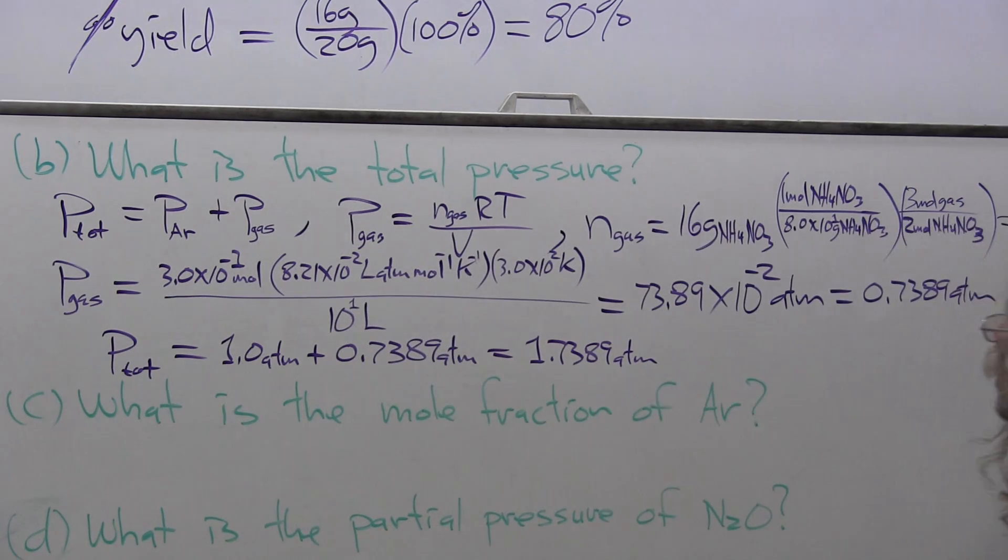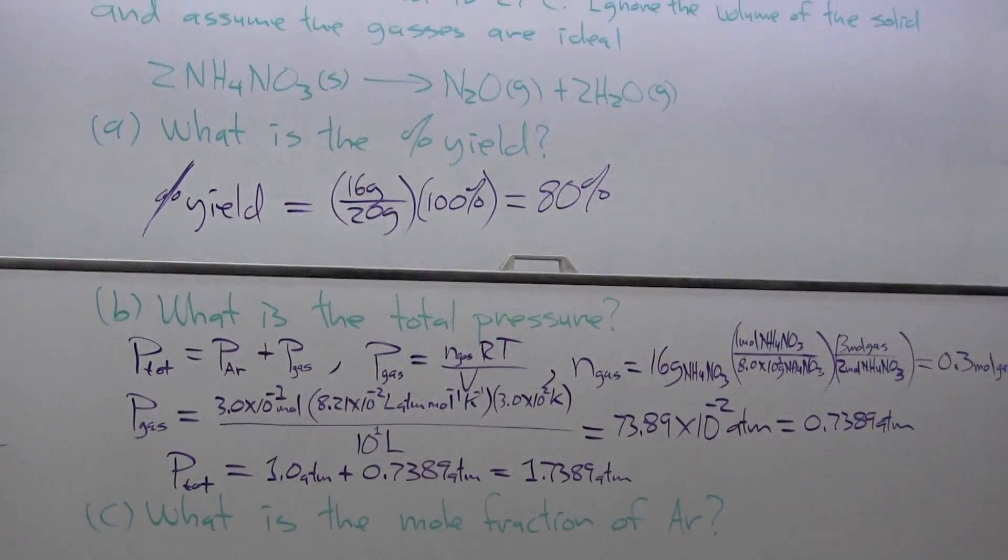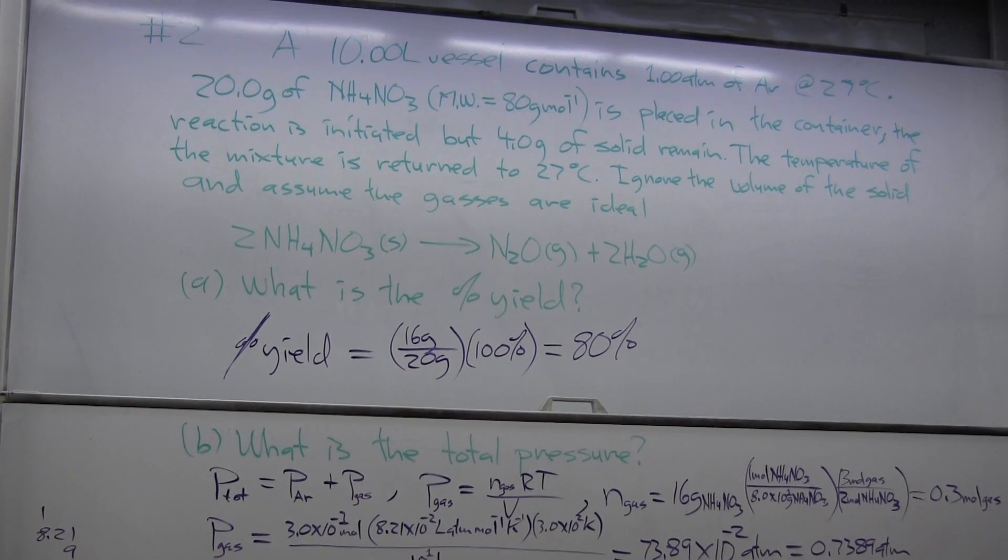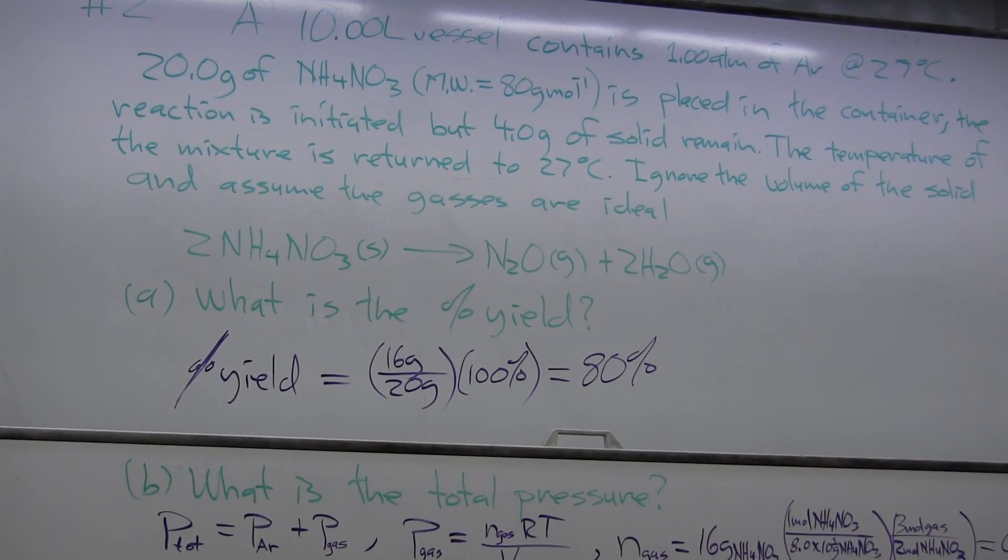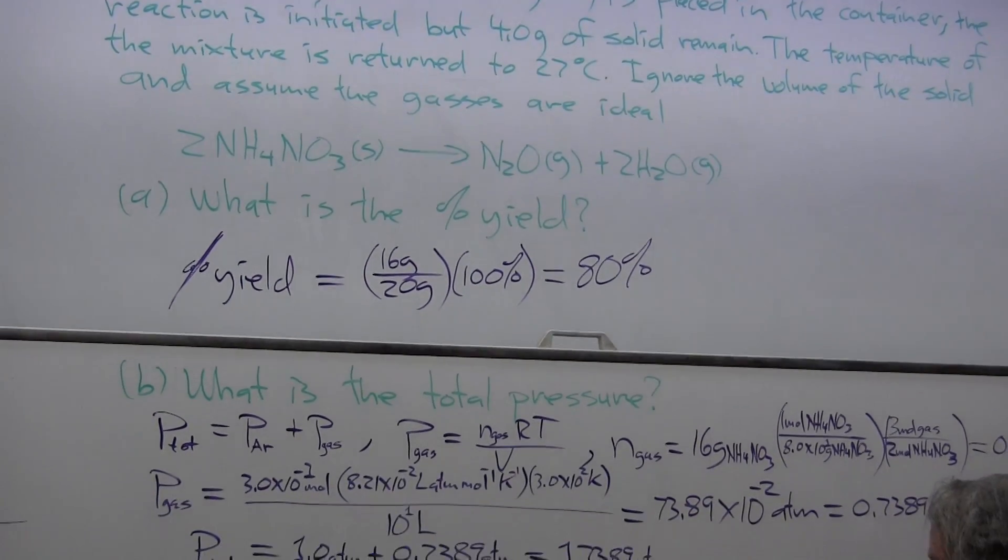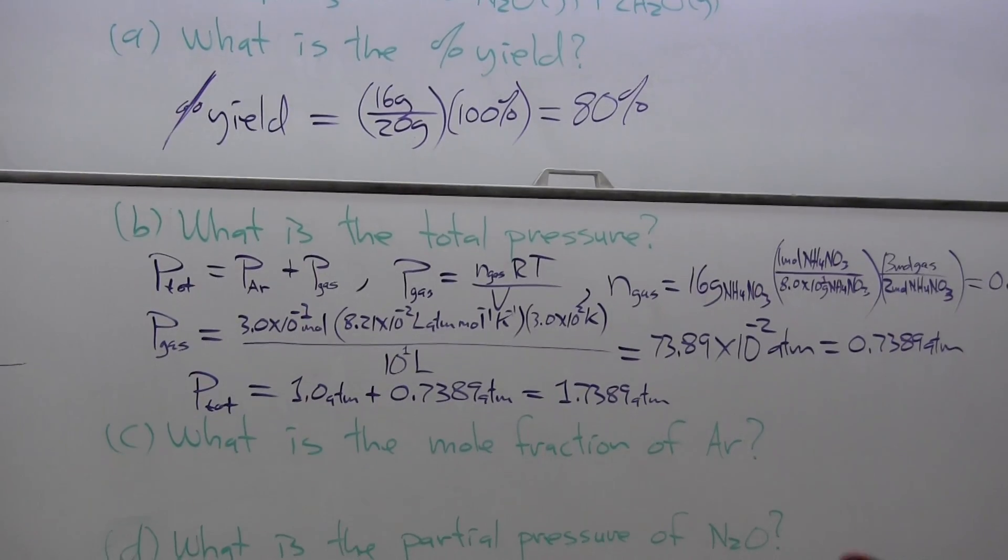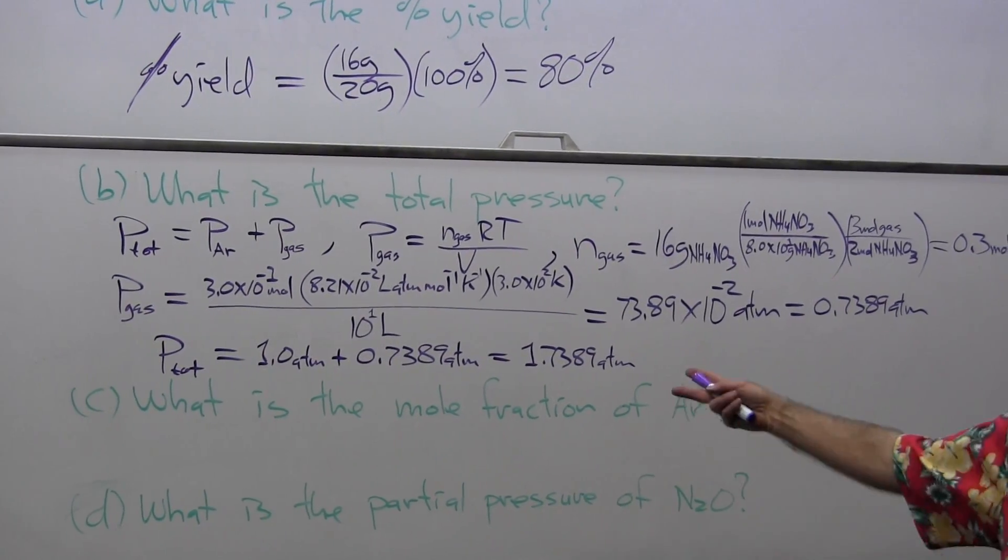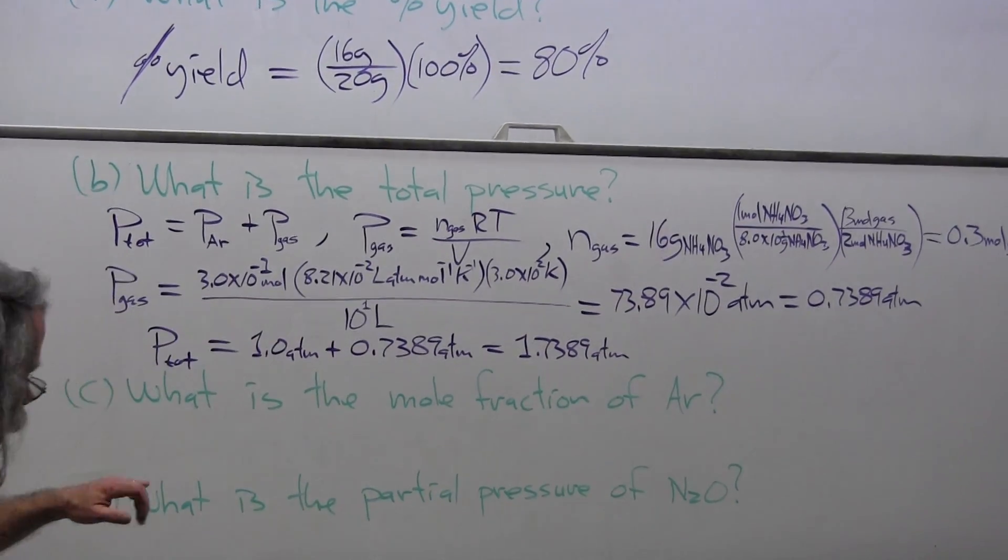Now P_total is equal to the pressure of argon plus the pressure of the gas equals 1.0 atmospheres plus 0.7389 atmospheres equals 1.7389 atmospheres. And if we wanted to round off at this point, we could go back and look at the initial problem. In this calculation, I'm restricted to two significant figures, so it would be 0.74 atmospheres or 1.7 atmospheres if I wanted to round off, but I would accept this. I think this is a perfectly acceptable answer.